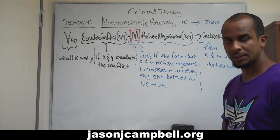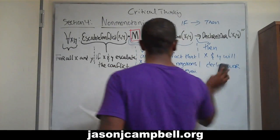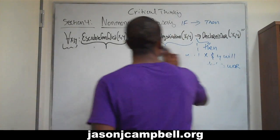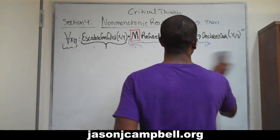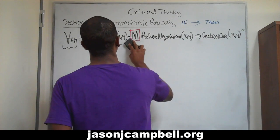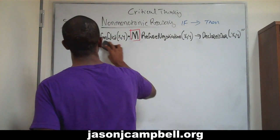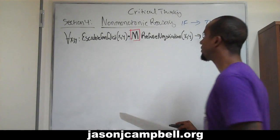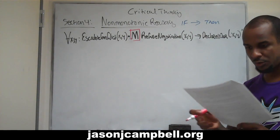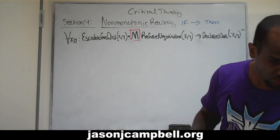We're looking at non-monotonic reasoning. We're going to take what we have here and show that we can use what we've already learned to make it even more complex. What we're going to do now is incorporate serial argumentation.